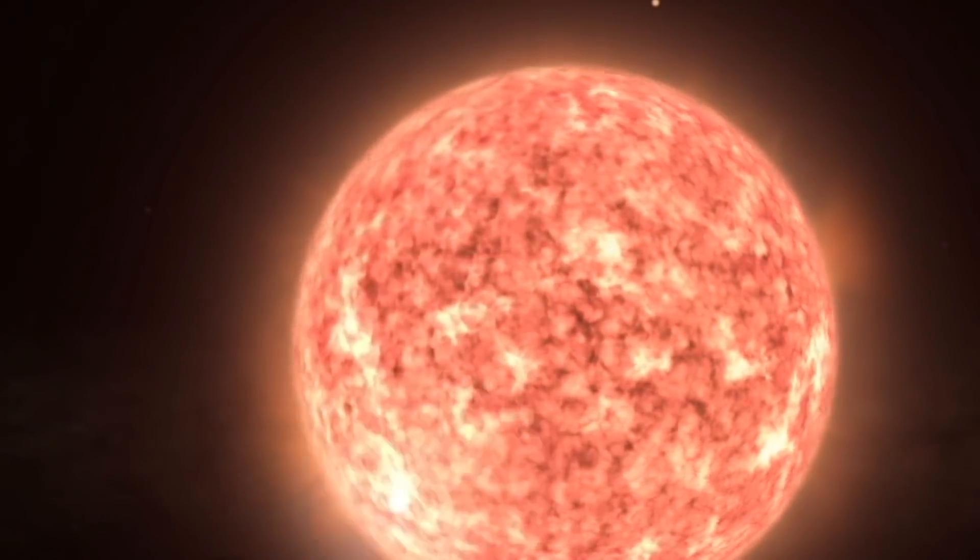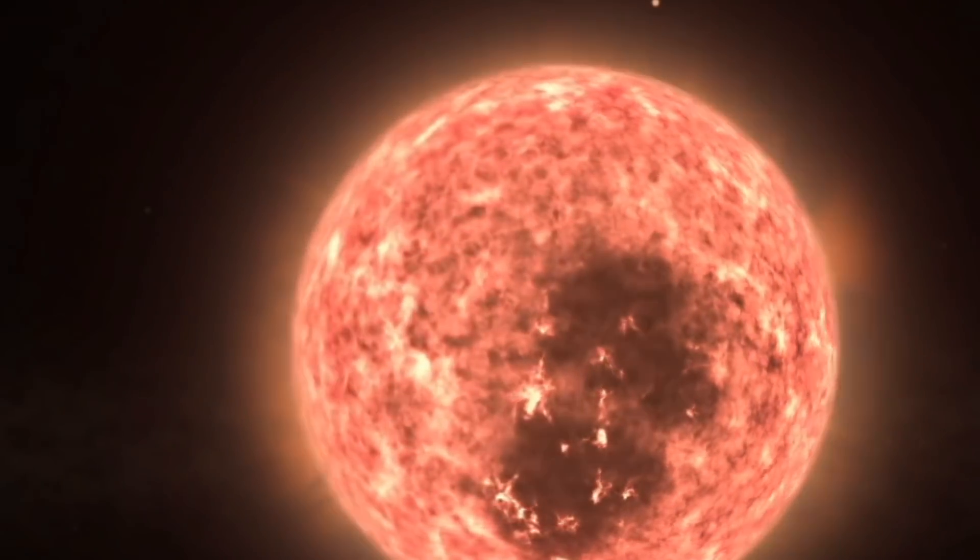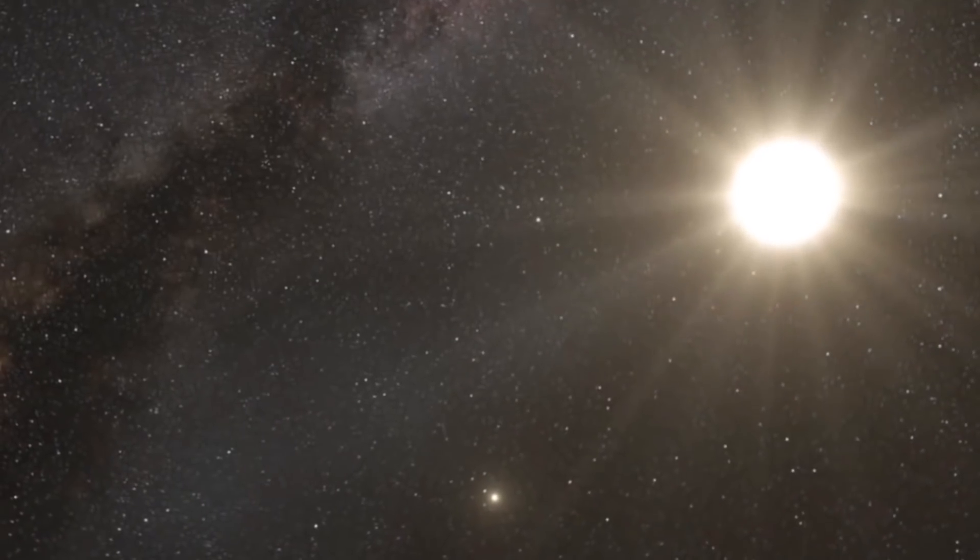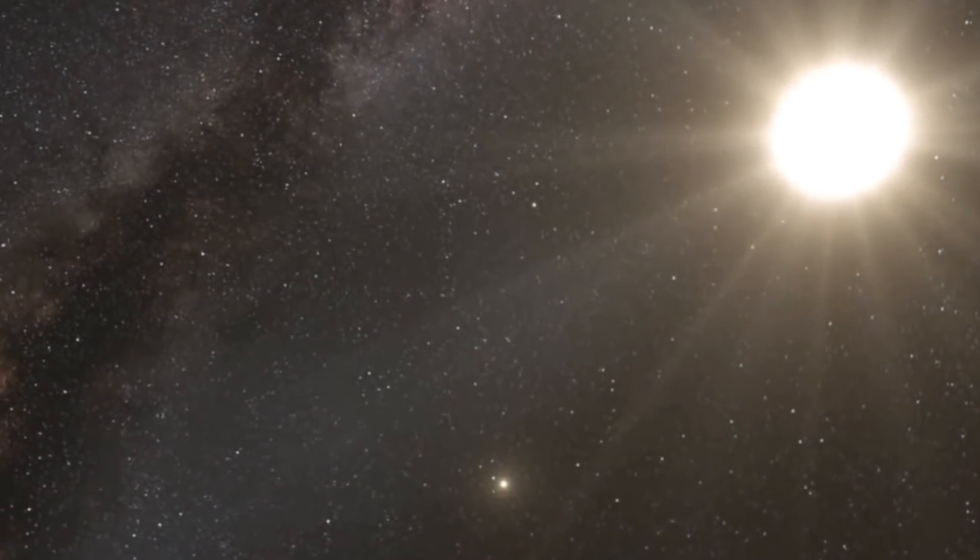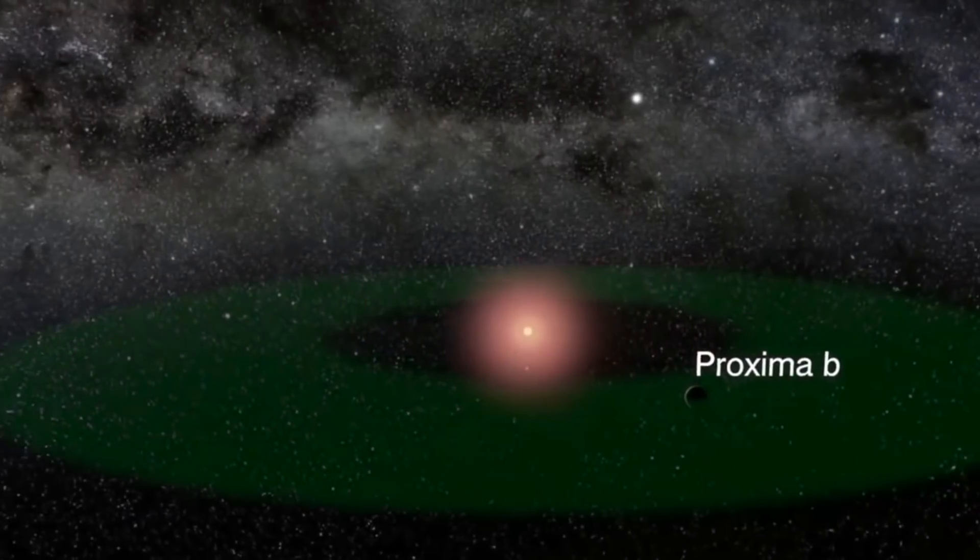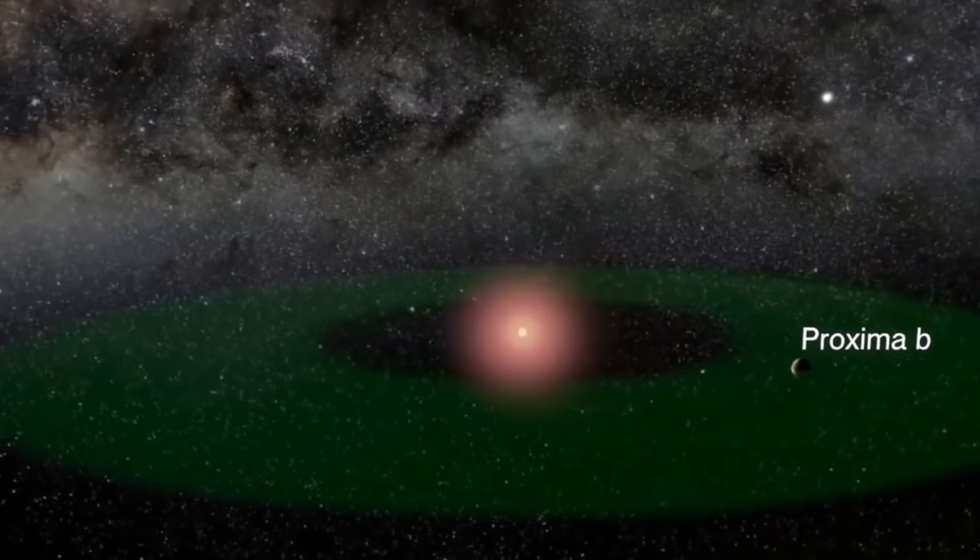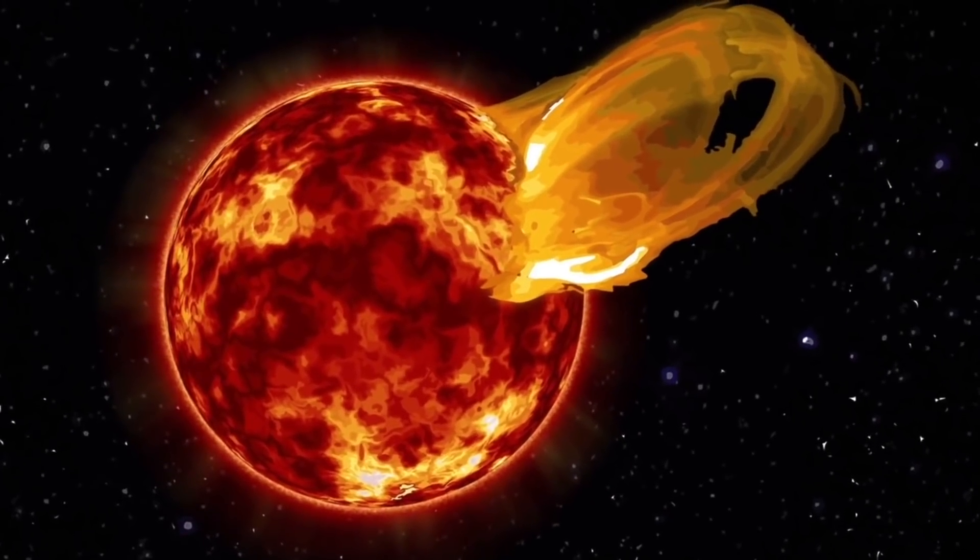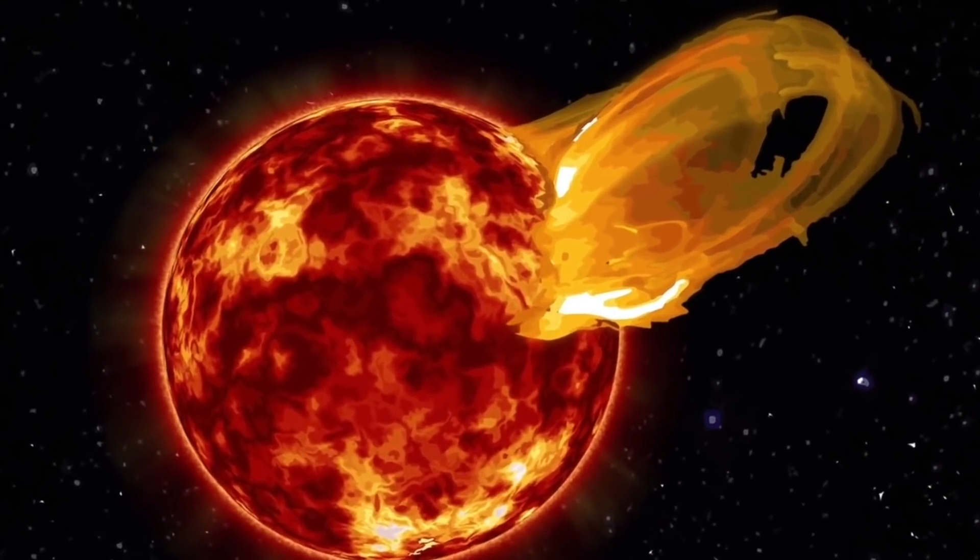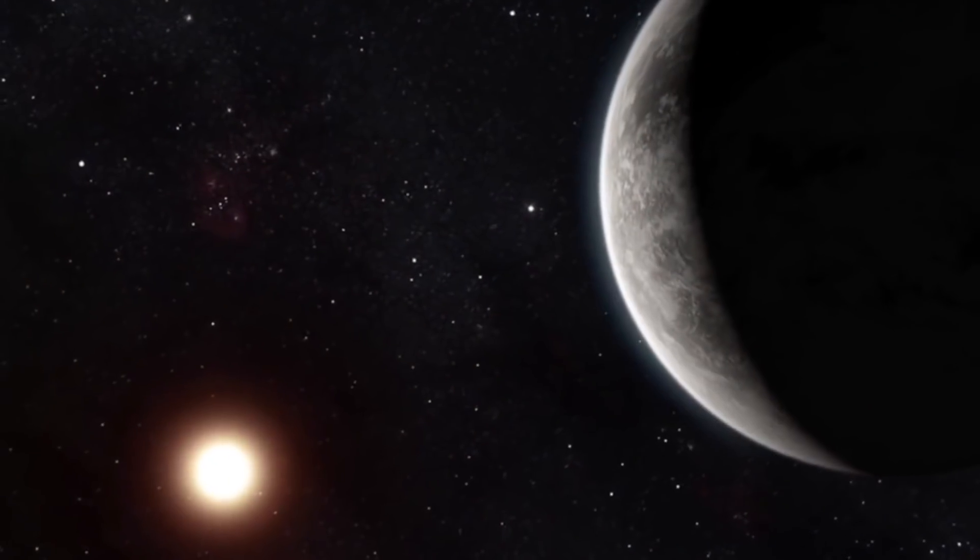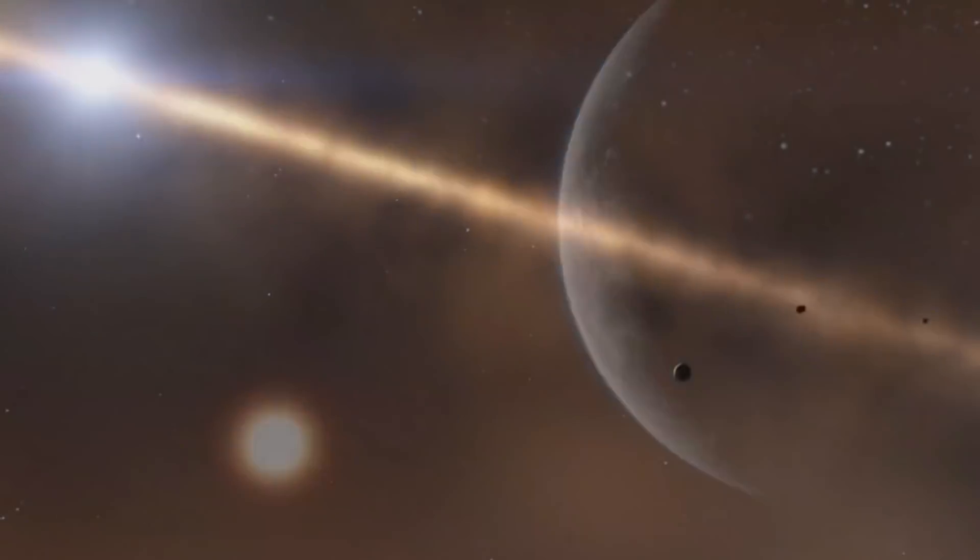The newly discovered odd planet is known as B Centauri B, as it orbits around B Centauri, a massive two-star system visible to the naked eye. It lies 325 light-years away from Earth. It is a gas giant and the size of it is really amazing. It's 11 times the mass of Jupiter, and has a 100-fold larger orbit than Jupiter's. And strangely, it most likely formed there.